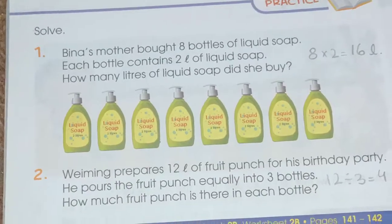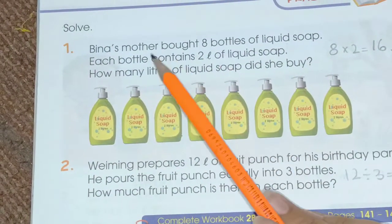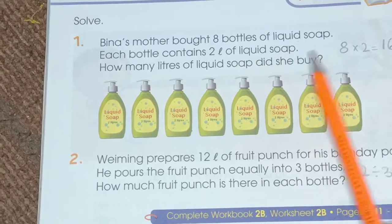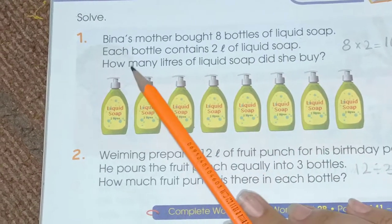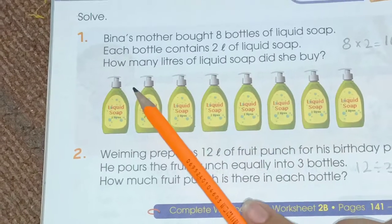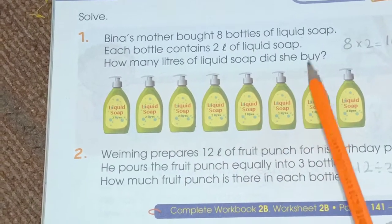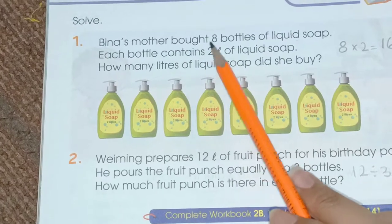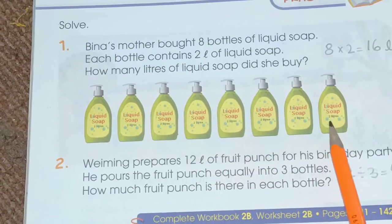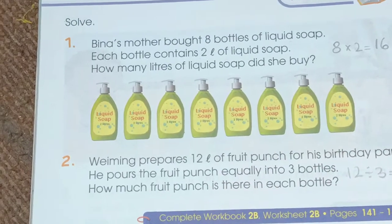Page number 267: Bina's mother bought 8 bottles of liquid soap. Each bottle contains 2 liters of liquid soap. How many liters of liquid soap did she buy? 8 multiplied by 2 is 16. It means she bought 16 liters of liquid soap.